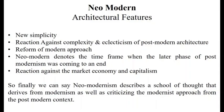Here are the architectural features of Neo-Modern architecture. First is 'new simplicity' — there was a need to break away from the complexity of Post-Modern architecture. Then it came as a reaction against the complexity and eclecticism of Post-Modern architecture. 'Reform of modern approach': the modern approach was also reformed to break away with the monotony and the complex process of simplistic Modernist architecture.